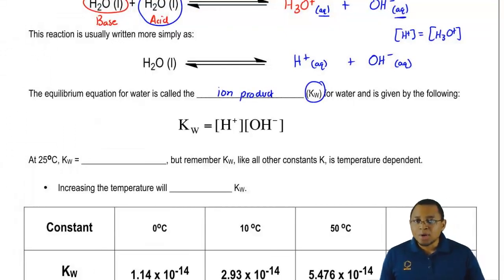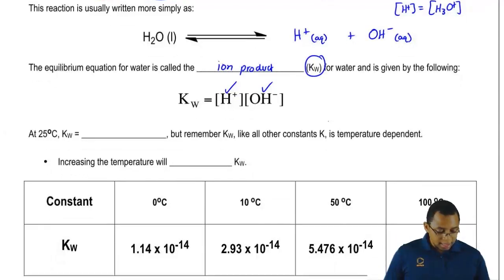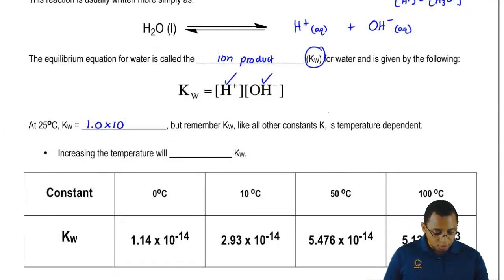Kw equals your hydronium ion multiplied times your hydroxide ion. And at 25 degrees Celsius, Kw is 1.0 times 10 to the negative 14.